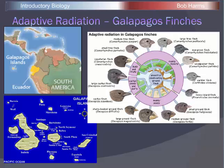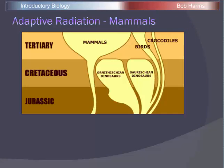Mammals as an order underwent a major adaptive radiation. During the Jurassic and Cretaceous, dinosaurs were the dominant land organisms and mammals were small and rare in the fossil record. At the end of the Cretaceous, when dinosaurs went extinct, mammals underwent an adaptive radiation — the species present rapidly diversified into many new species, so that most major mammal groups including rodents, carnivores, and primates all trace their origin to this period. This is thought to be an adaptive radiation filling the empty ecological roles left by the extinct dinosaurs.